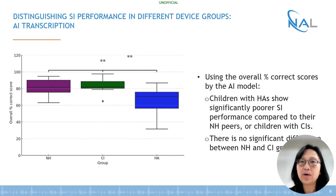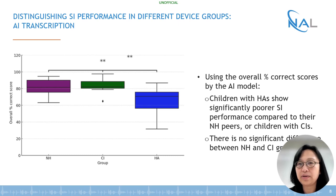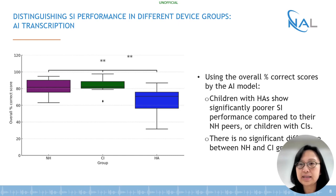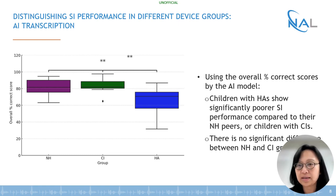Now let's see how AI performs in assessing speech intelligibility across different device groups. This figure shows the overall percentage correct scores from the AI model. Children with hearing aids have significantly lower speech intelligibility results compared to their normal hearing peers or children with cochlear implants. Children with cochlear implants show similar speech intelligibility outcomes to their normal hearing peers. This suggests the AI model can not only distinguish between normal hearing and hearing loss groups as naive listeners can, but can also differentiate results between cochlear implant and hearing aid groups.